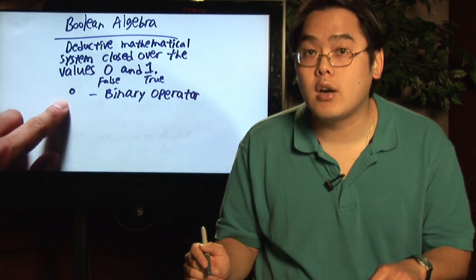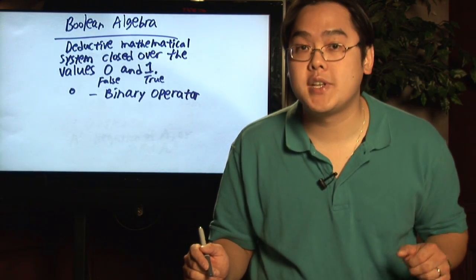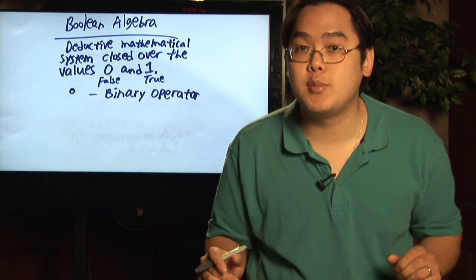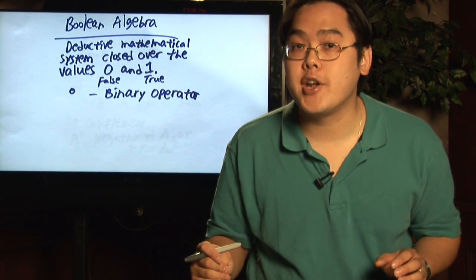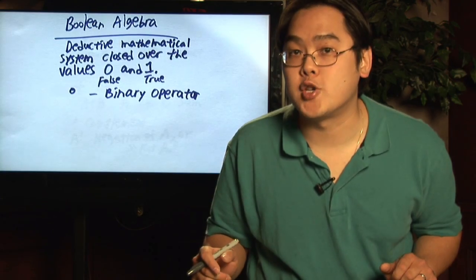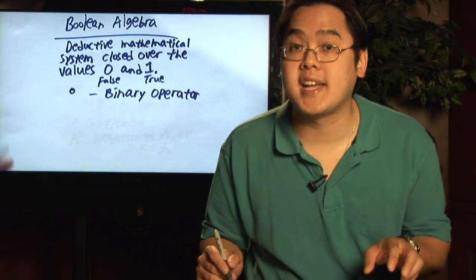Now the symbol here, the open circle is what's known as a binary operator. In other words, it's kind of like the generic symbol for the mathematical operation used in Boolean algebra. And here's three specific examples.